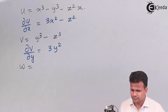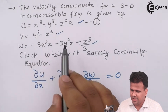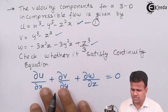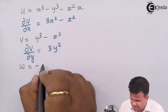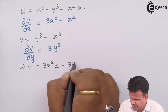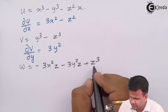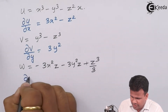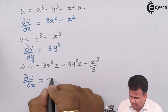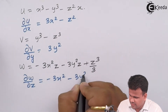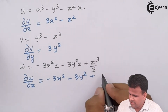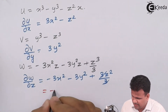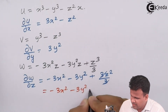The third component, w = −3x²z − 3y²z + z³/3. We differentiate this with respect to z: ∂w/∂z = −3x² − 3y² + 3z²/3, and simplifying, 3 cancels to give ∂w/∂z = −3x² − 3y² + z².